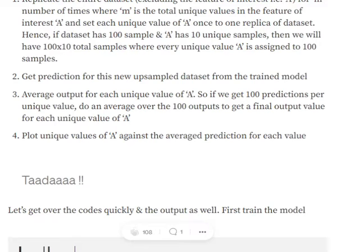Summarizing everything: you need to train a model, then you need to replicate your dataset x number of times, where x is the total unique values of the feature of interest. So if it has two values, you replicate it twice; if three unique values, you replicate the dataset three times. For the new upsampled dataset that we have created, you need to get predictions from the trained model.